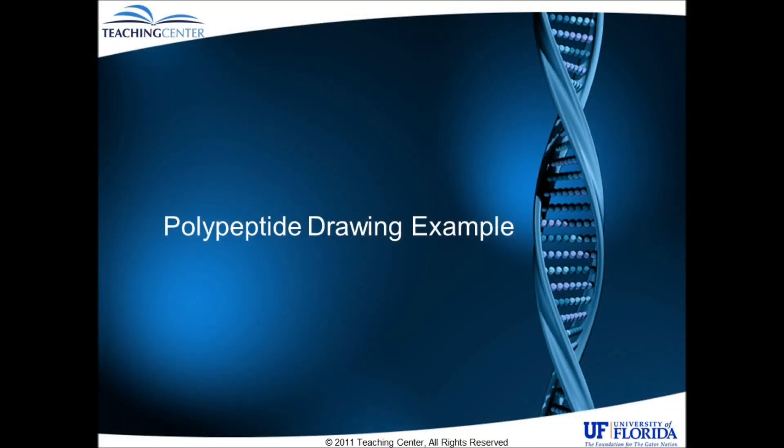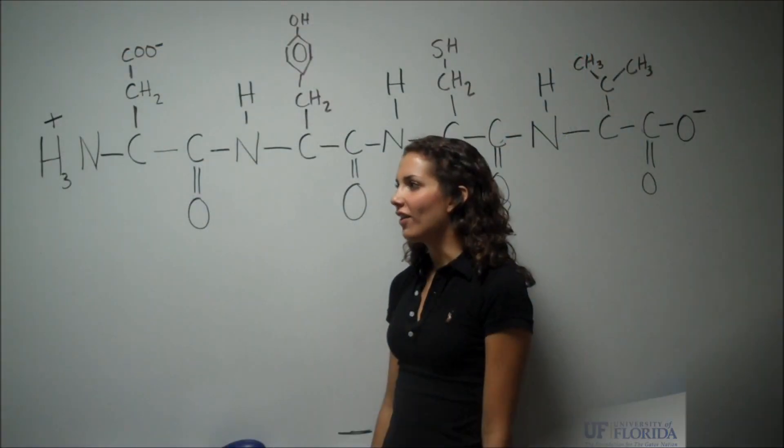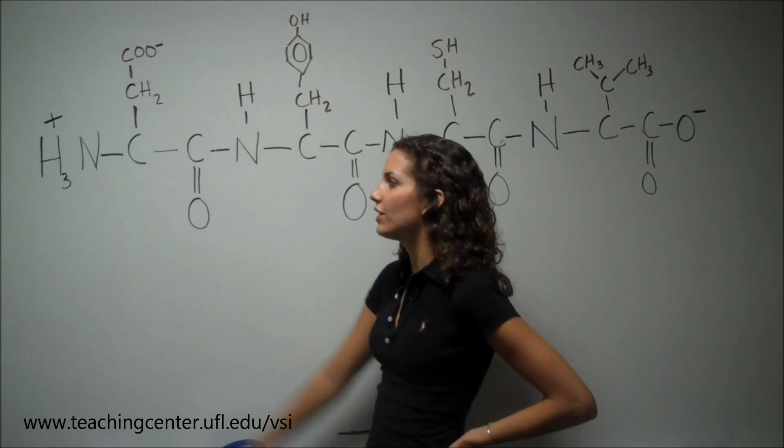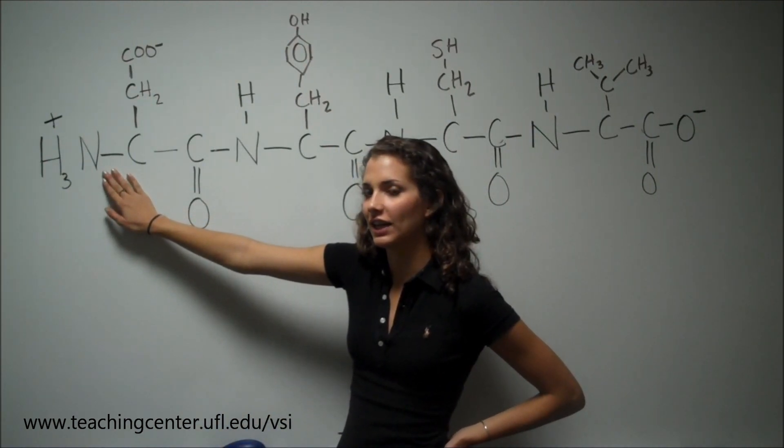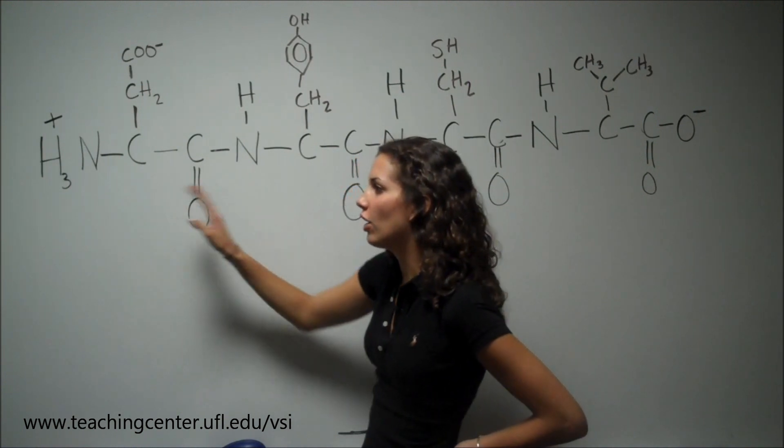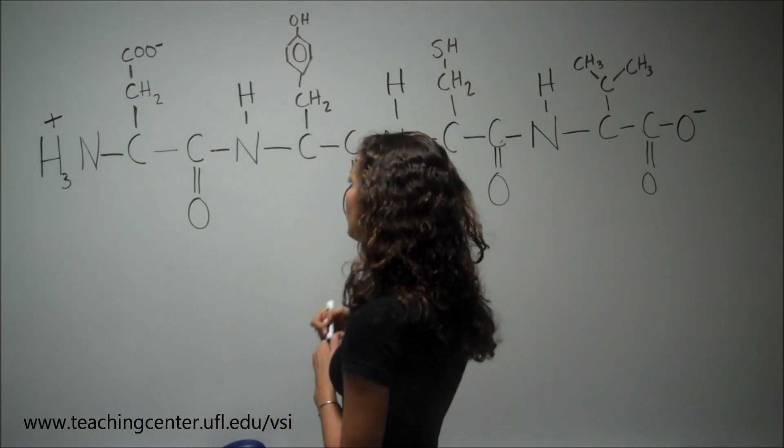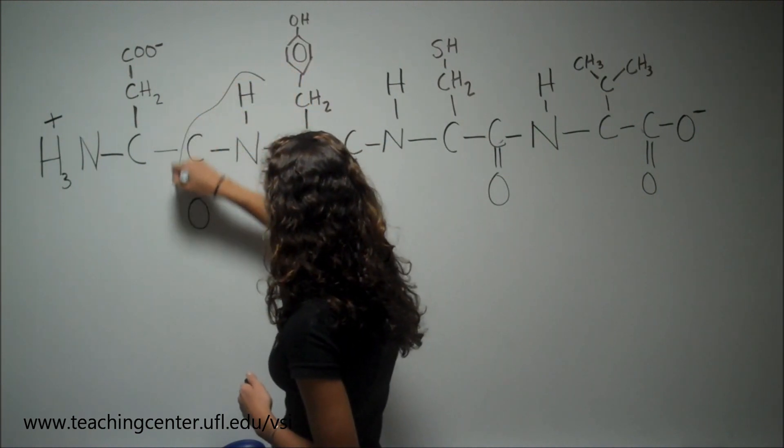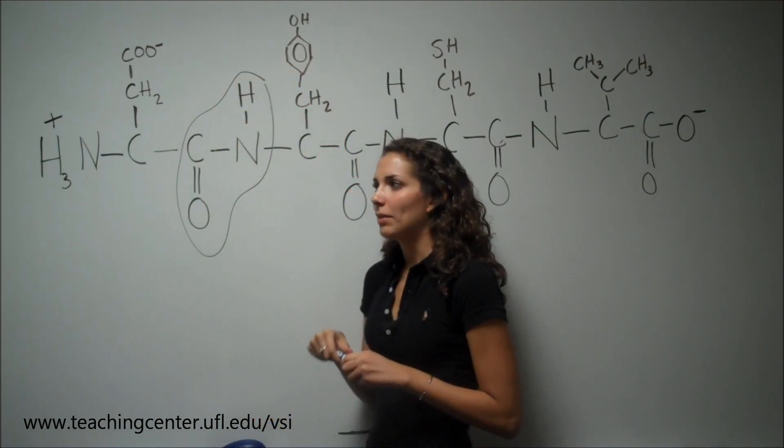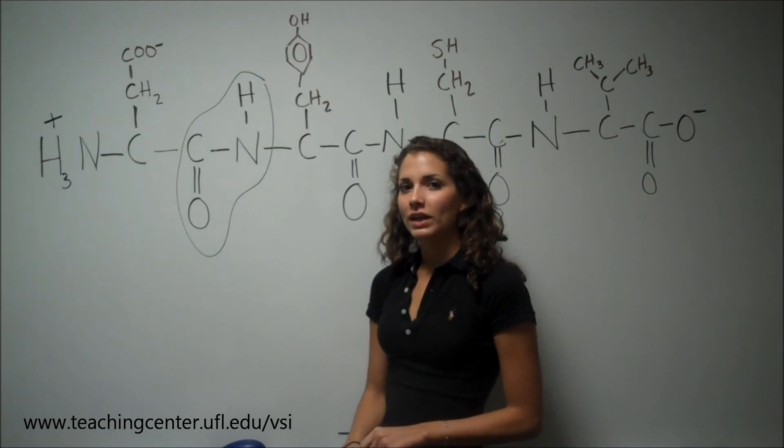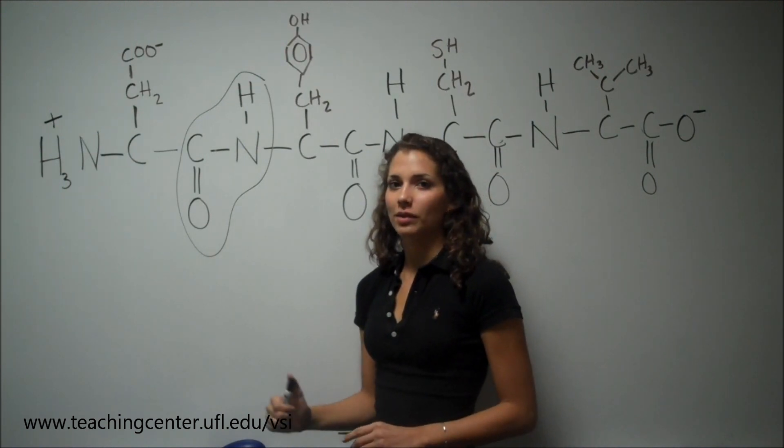I'll show you an example where you're given the drawing first. Okay, so just to begin analyzing this, notice that the amino terminal end of the chain is on the left, and this is the standard convention. And also notice what each peptide bond looks like. You should be able to recognize these so that you know where one amino acid residue ends and the other begins.